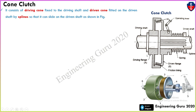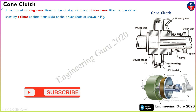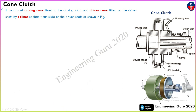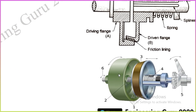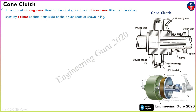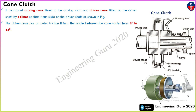This is the driving shaft and this is the driven cone — this is the rigid cone. The driving cone is fitted on the driving shaft, and the driven cone is fitted on the driven shaft with the help of a spline, meaning the driven cone can slide and rotate via the spline. In this 3D image we can see the driving cone and the driven cone, and here is the spline. The driving cone has an outer friction lining and the cone angle varies from 8 to 15 degrees — this is the main important point.